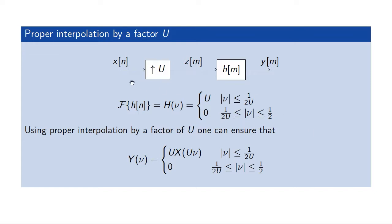To summarize: with a proper interpolation circuit consisting of an upsampler followed by an ideal low pass filter with the correct gain, we achieve a relation between the DTFT of the output and input that closely corresponds to the continuous-time formula. However, since any discrete-time signal has a limited frequency content, this relation only holds over a partial frequency range — specifically, up to one over two times the upsampling factor.